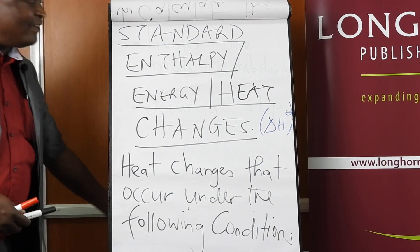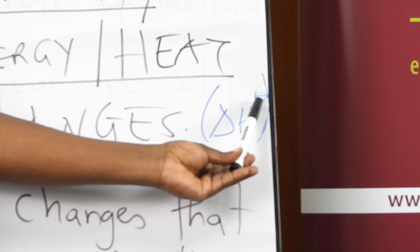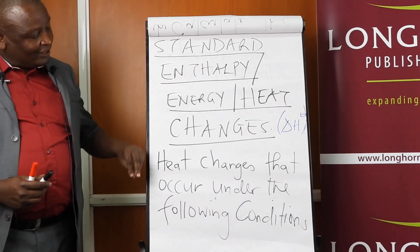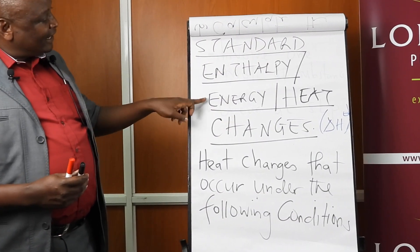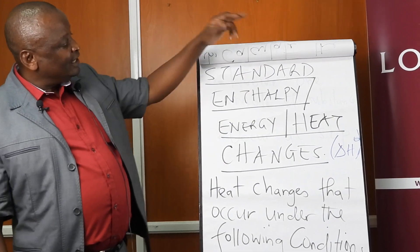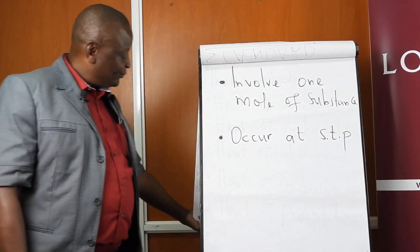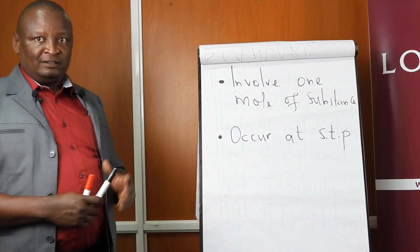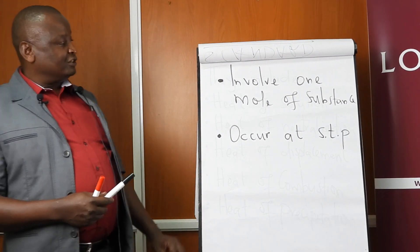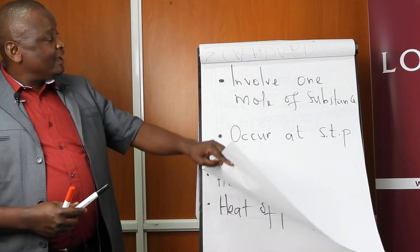Next we look at standard enthalpy changes, usually abbreviated as delta H with the knot symbol. These are heat changes — and the terms enthalpy, energy, and heat are sometimes used interchangeably — that occur under two conditions: first, when one mole of the substance is involved; second, when the conditions are standard temperature and pressure. Once a reaction takes place under these two conditions, the energy change produced is a standard energy change.